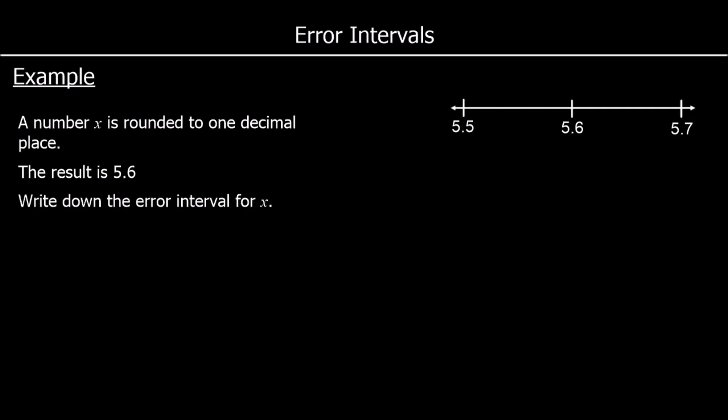When we look at error intervals, we are looking at a number that has already been rounded, and we are looking at what the number could have been before it was rounded.